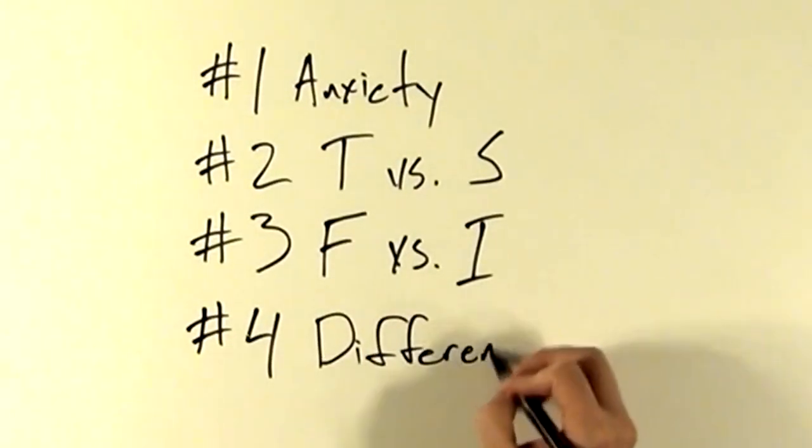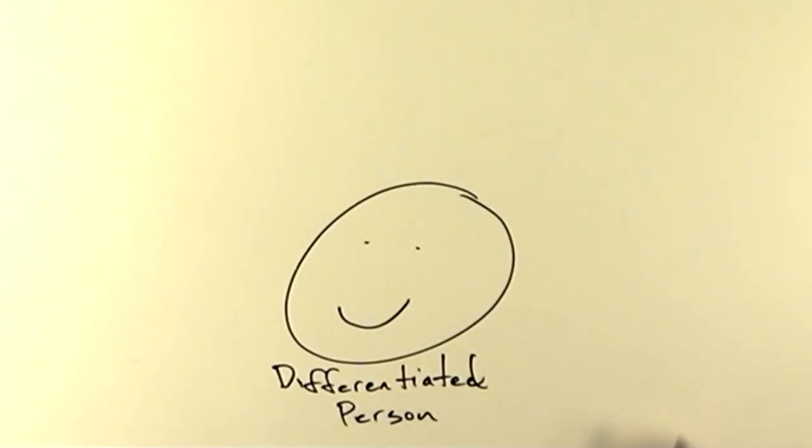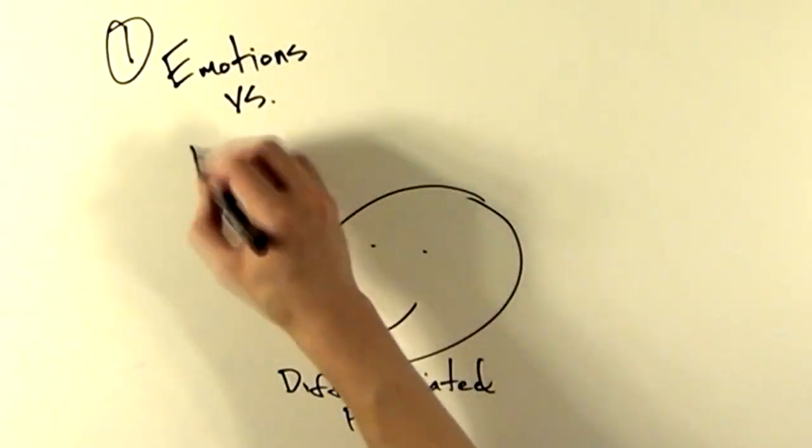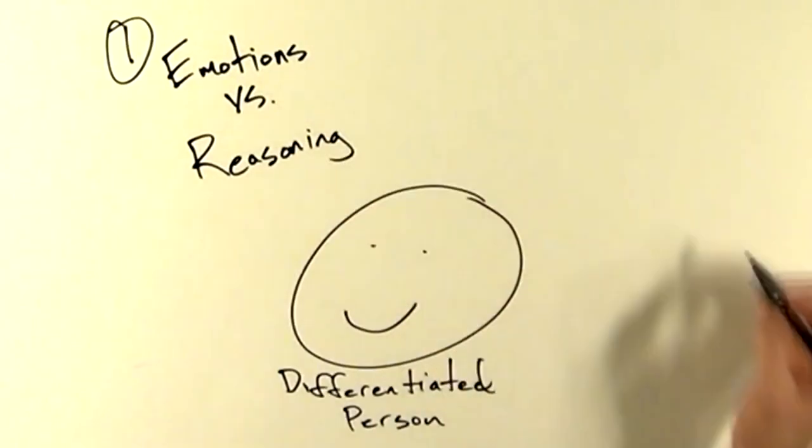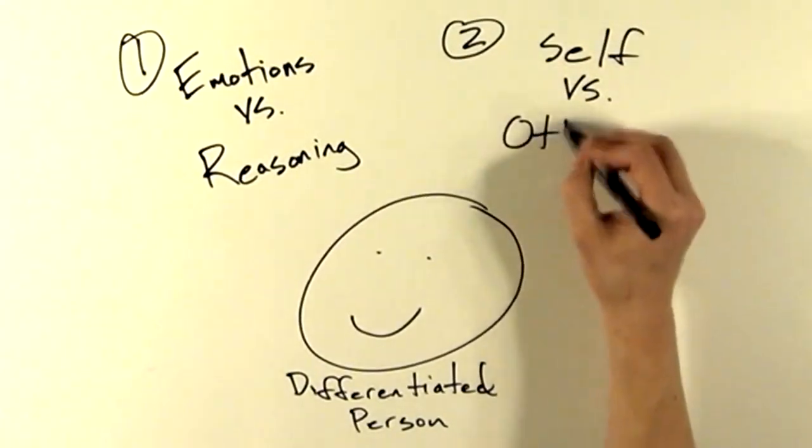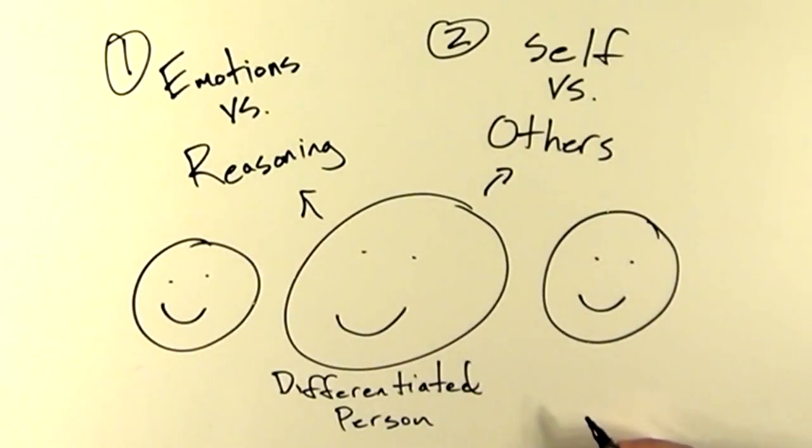Number four, differentiation. This is his most famous concept. If someone is differentiated, they can do two things well. They can differentiate between their emotional guidance system and their reasoning guidance system. This allows them to choose to be guided by either system, and they can differentiate themselves from other people. They don't get wrapped up in other people's emotions, and they can be intimate with others while also remaining separate and individuated.